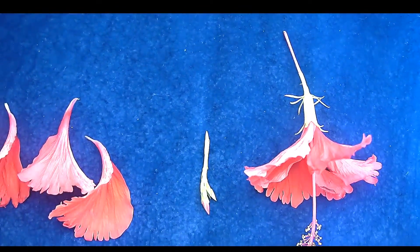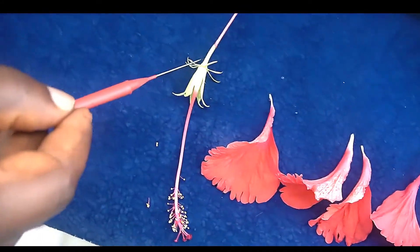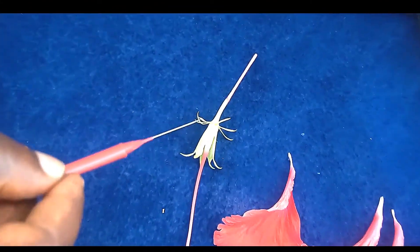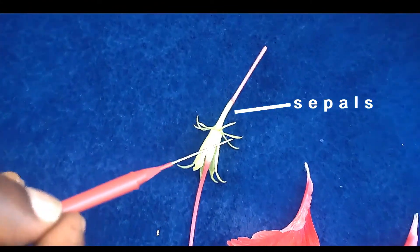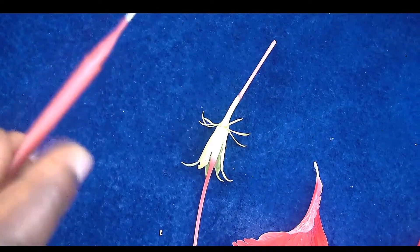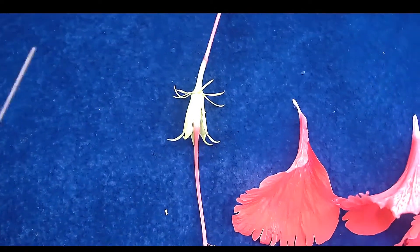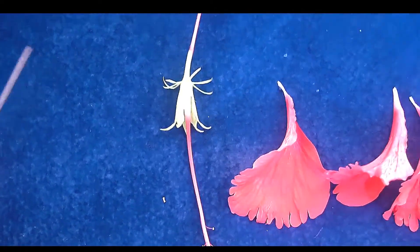But then each of them, like we have here, is a sepal. So this is a sepal, this is a sepal, this is a sepal. And all of them together, we call calyx.